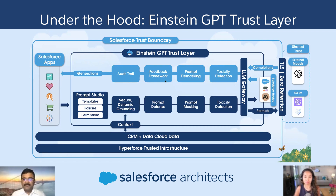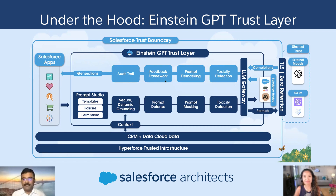For example, Apex GPT — based on the quality of code and test cases it is generating — we collect feedback from our users and are able to fine-tune those models. As we know, these LLM models use billions and trillions of parameters, and this feedback will be leveraged to identify those parameters we can use for fine-tuning them for better performance and accuracy.